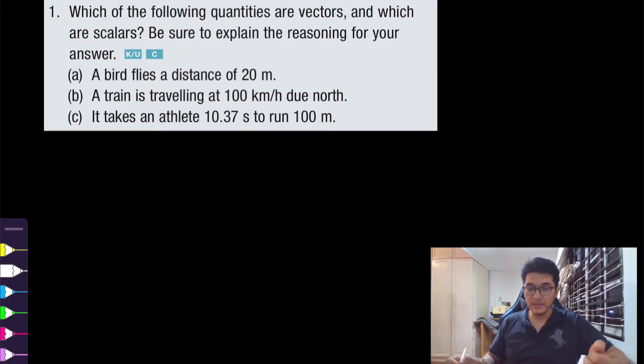A scalar is anything that only has a magnitude or a length, whereas a vector is something that has a magnitude or a length but as well has some direction associated with it. So let's quickly write it down.